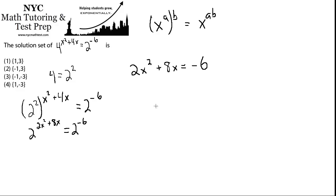And how do you solve a quadratic equation? Well, you have to get everything on one side equal to 0. So we'll say 2x squared plus 8x, and we're going to add that 6 over, so plus 6 equals 0.